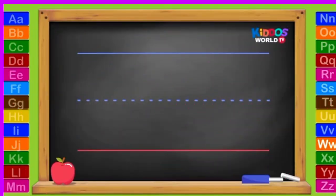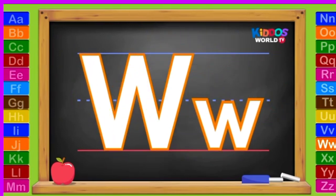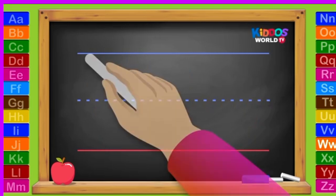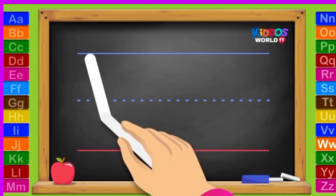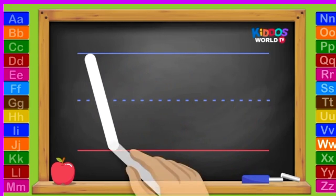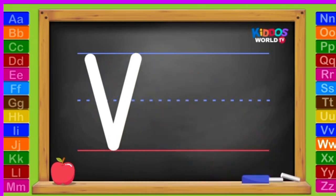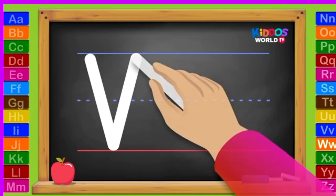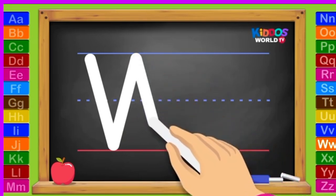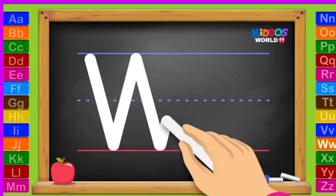The next letter is the letter W. Uppercase W. Slant down, slant up, slant down again, and slant up.